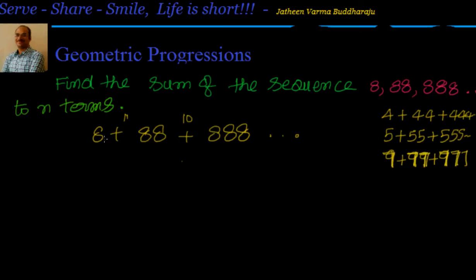You can see that 88 by 8 is 11, whereas 888 by 88 is approximately 10 point something. So it seems like a geometric progression but not straight. We have to manipulate it.